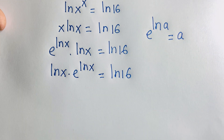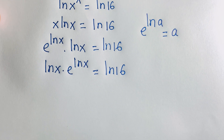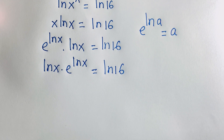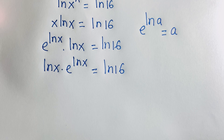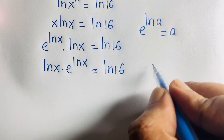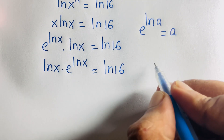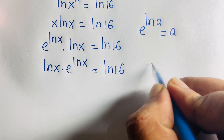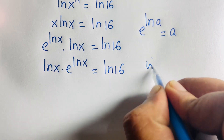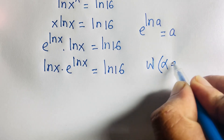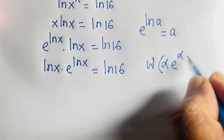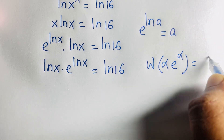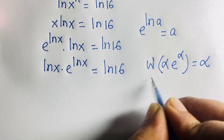We now use the Lambert W function. The key property is: W(α · e^α) = α.